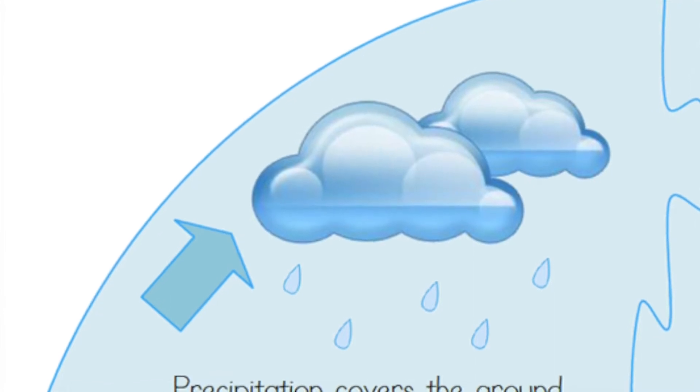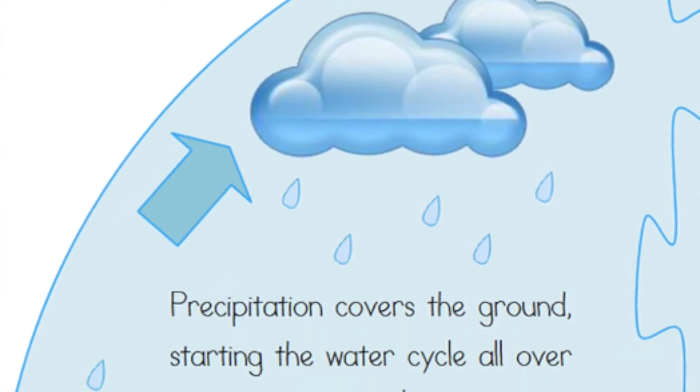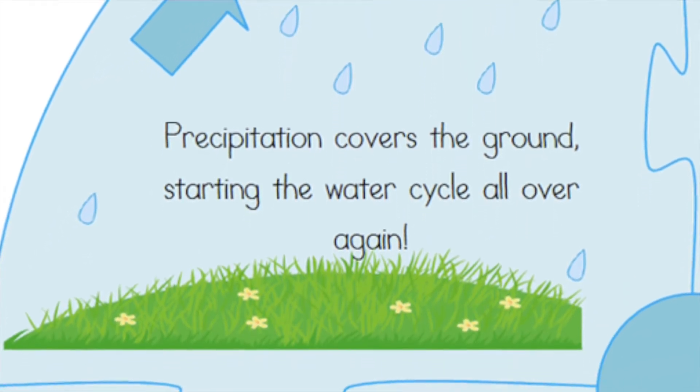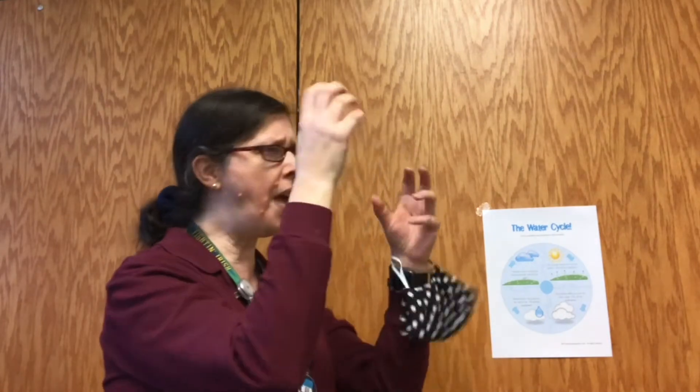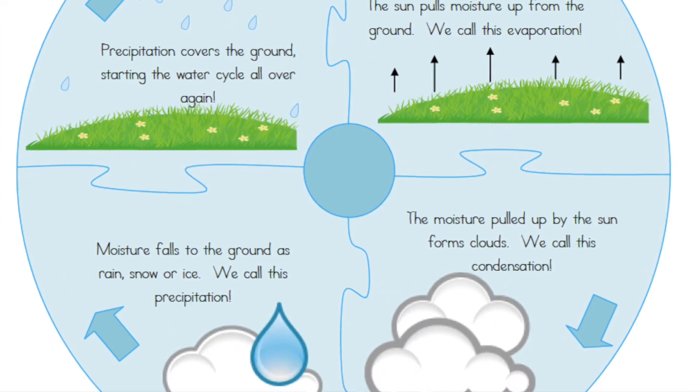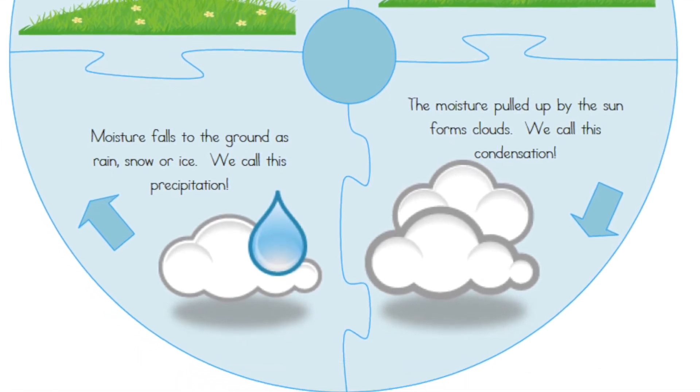Once that moisture falls back to the ground — into the rivers, into the ponds, onto the ground — it's back on the earth again. The water cycle starts all over because that precipitation, that water, is back on the earth. The sun pulls moisture out from the ground, it evaporates up into the air, all that moisture comes together to form clouds through condensation, and then it falls back down again. It's a never-ending cycle.